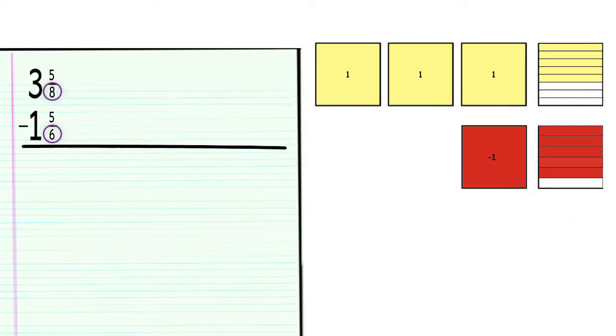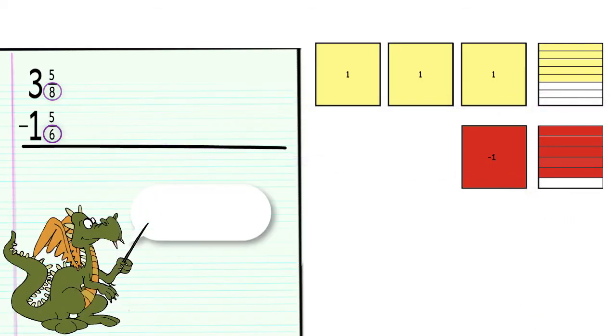To find a common denominator, we need to find a number that both 6 and 8 go into. So let's make a list of their multiples: 6, 12, 18, 24. Wait, 8 is also a multiple of 24. So our common denominator will be 24.